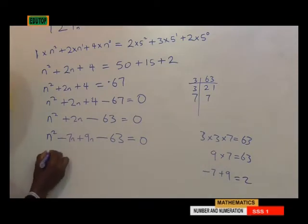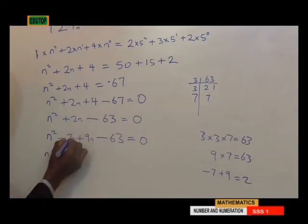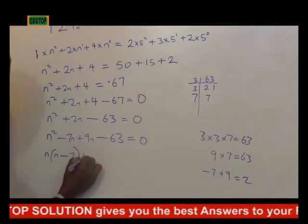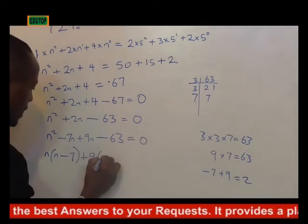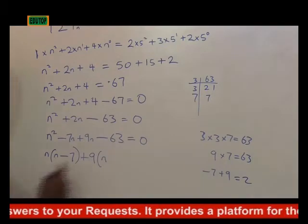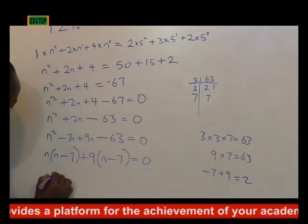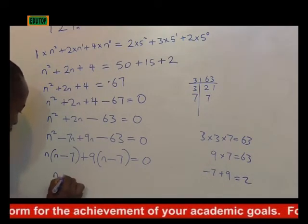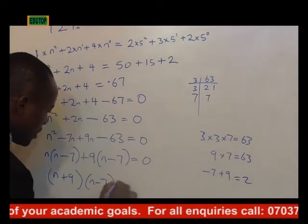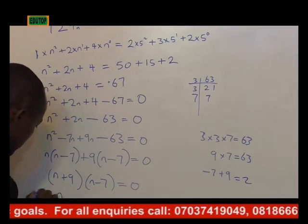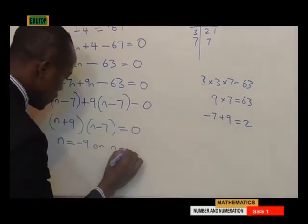Taking out common factors: n times (n minus 7) plus 9 times (n minus 7) equals 0. The factors of 9 and 63 give us (n plus 9)(n minus 7) equals 0. Which means n is equal to minus 9 or n is equal to 7.